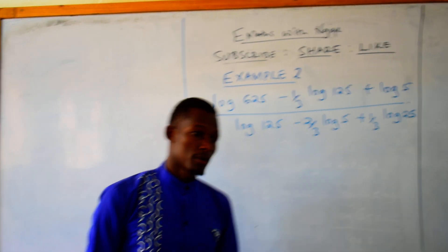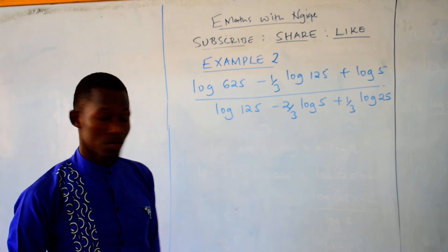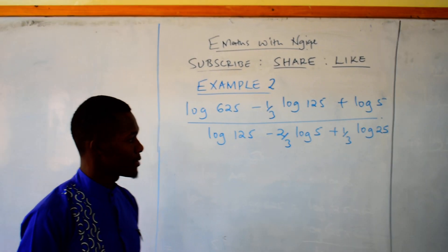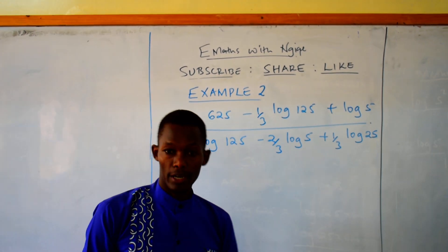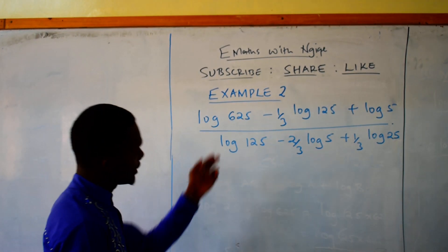So we check example number 2. Log of 625 minus one-third log of 125 plus log of 5, then divide by log of 125 minus two over three log of 5, plus one over three log of 25.